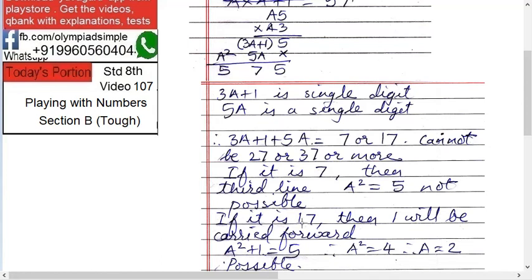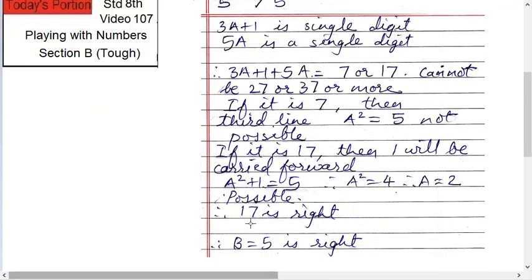Now let's try with 17. Now if it is 17, then 1 will be carried forward. So the third line will be, or the third column will be, A square plus 1 equals to 5, right? Because this A square is 5 and 1 will be carried forward from 17. So A square equals to 4, so A equals to 2. Now this is possible, right? Because A can be 2. That's why the option is 17 is correct.